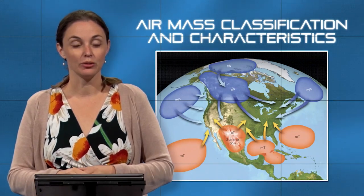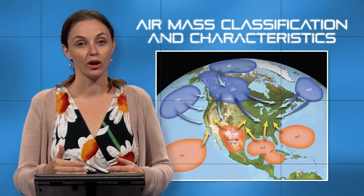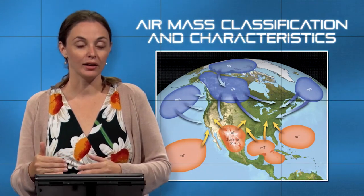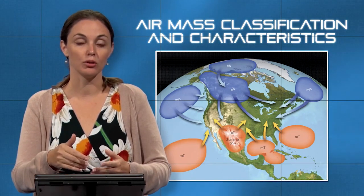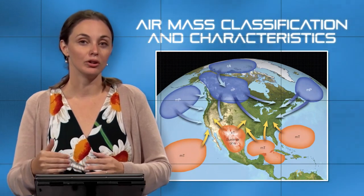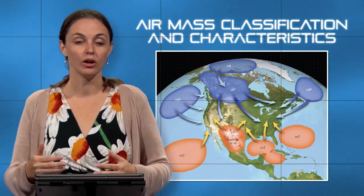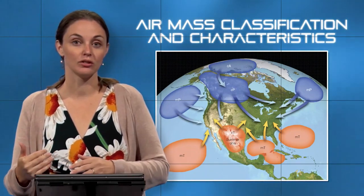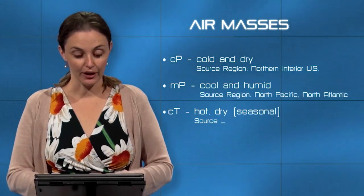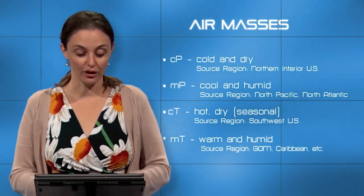In South Louisiana, particularly during winter, there's a balance between the MT air mass from the Gulf of Mexico — which dominates in summer — and the CP air mass from the northern US. Our winter weather is defined by which one plays a bigger role. This is why South Louisiana has such chaotic winter weather: we're on a battleground between warm, humid MT air and cold, dry CP air.